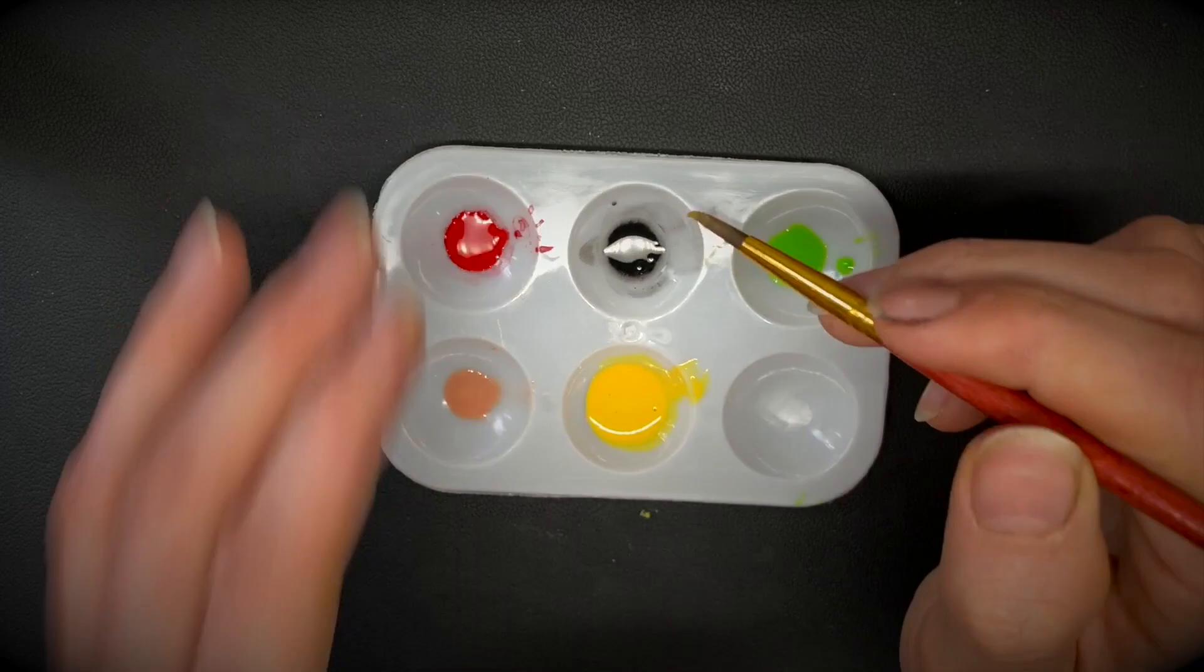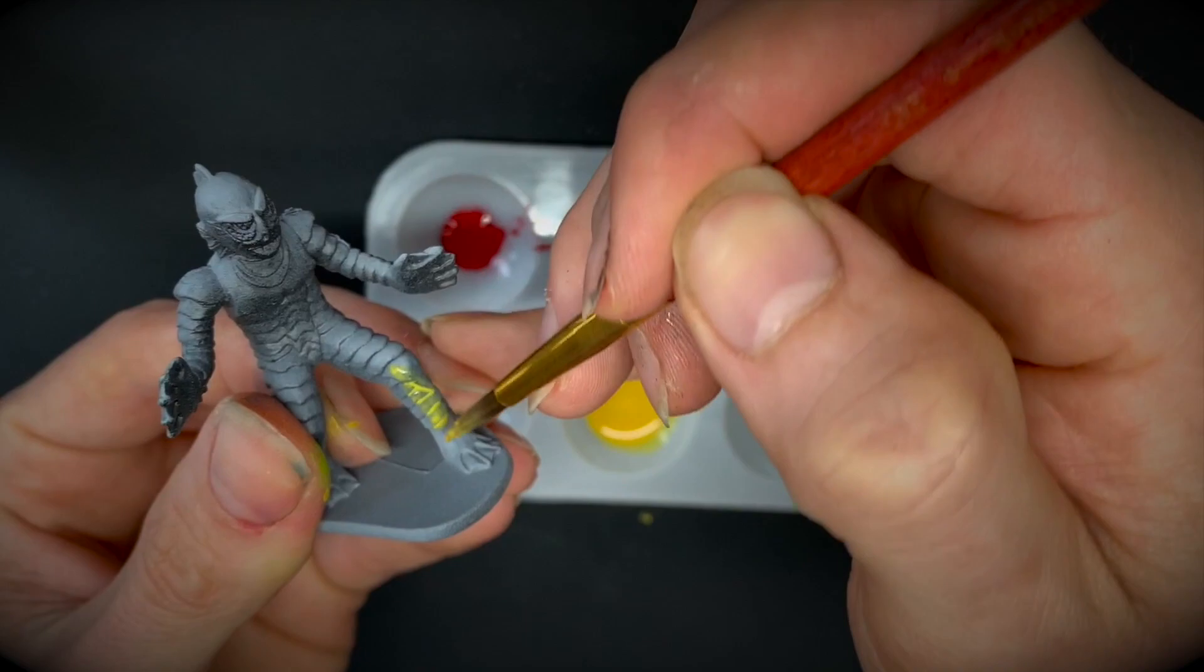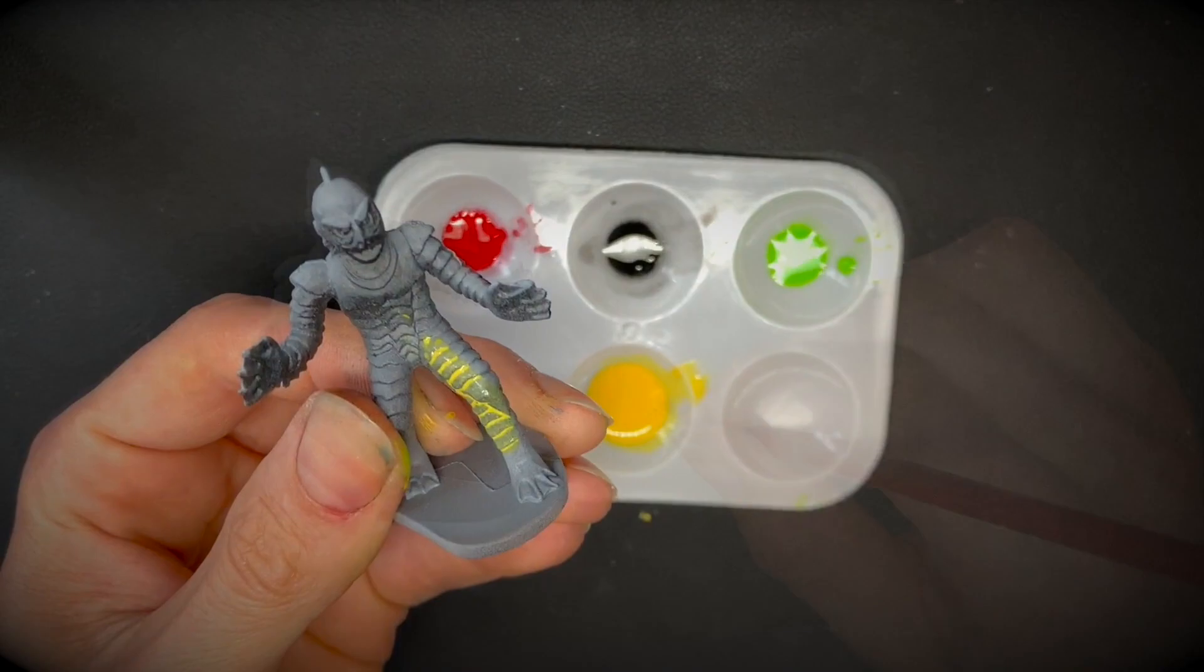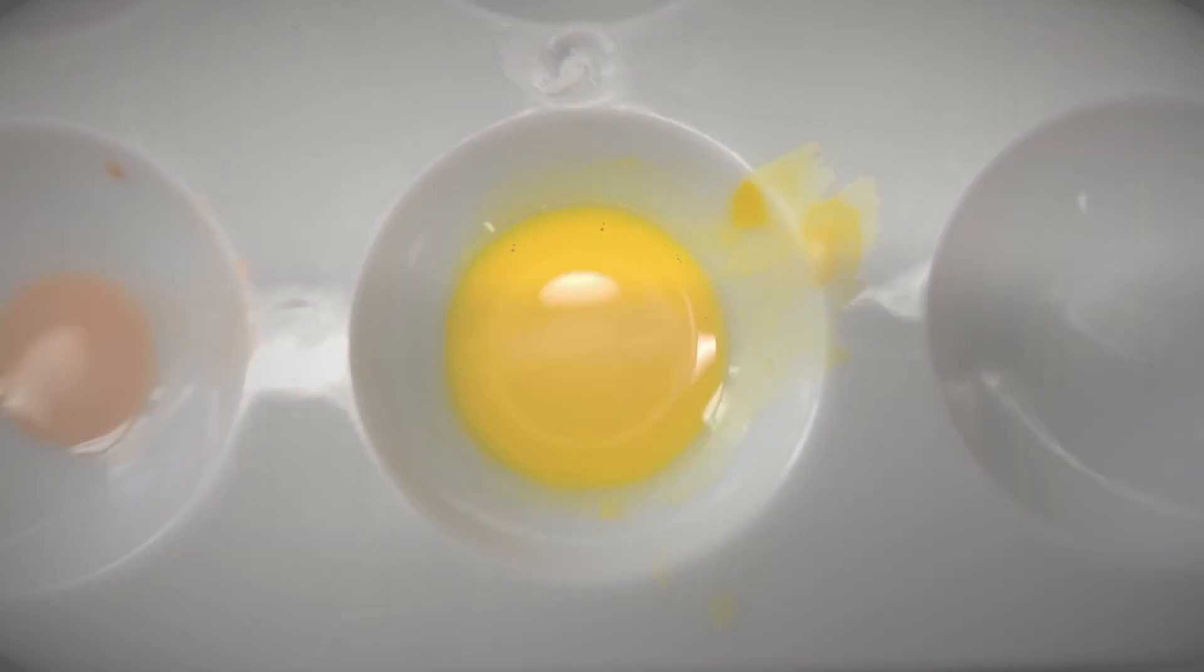And let's see what it does. All right, it's dropping nicely into the recesses, but as you can see it's still tinting the other layers, so maybe next time I would try 20-25 drops of water.